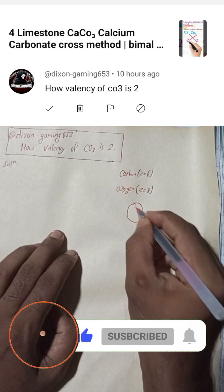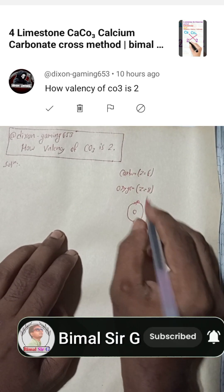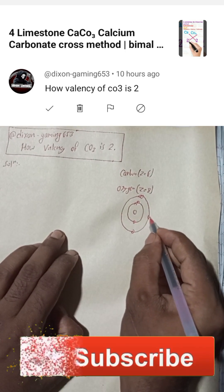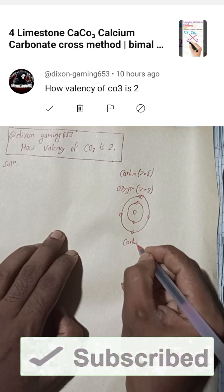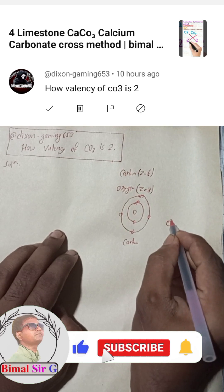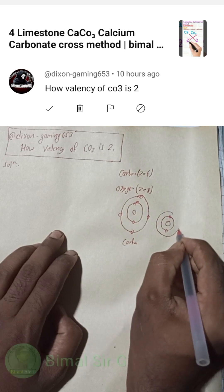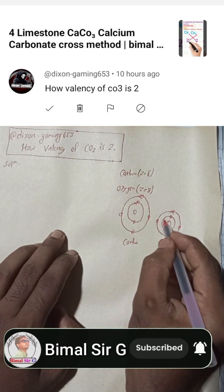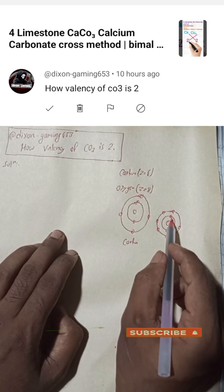For carbon, in the first orbit there are 2 electrons, and in the outer orbit there are 1, 2, 3, 4 — so the total is 6. For oxygen, in the first orbit there are 2 electrons, and in the second orbit there are 1, 2, 3, 4, 5, 6 — so total is 6 plus 1 makes 7, plus 1 makes 8.